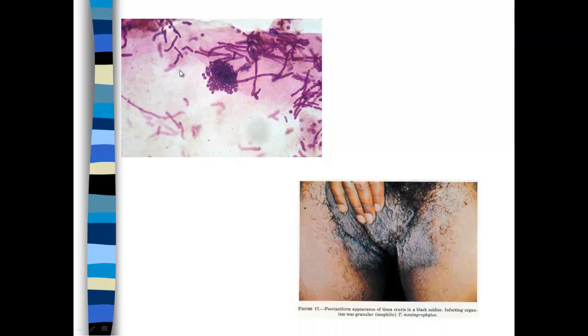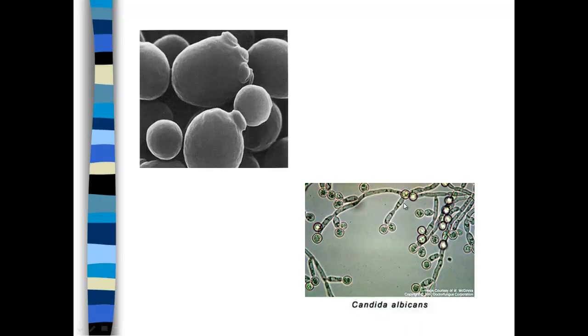This is tinea — specifically tinea cruris, or jock itch. You can see it's very extensive here. It's a superficial infection, but it can get quite severe. This is yeast showing the yeast starting to bud, and this is Candida albicans — this is infective yeast, bad yeast. When you have a yeast infection, this is the type of yeast typically that will be the infective agent.